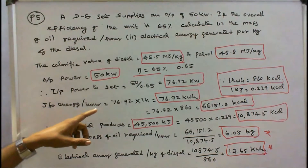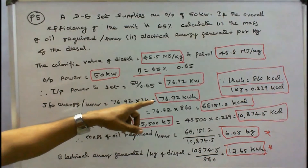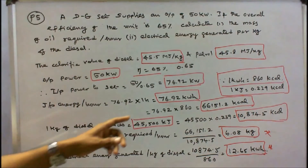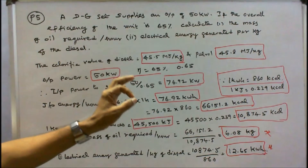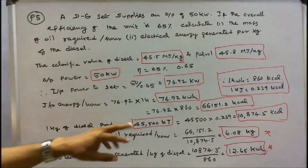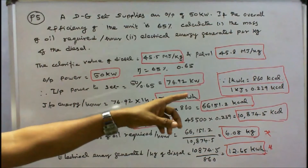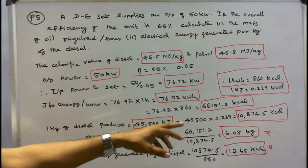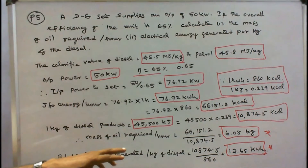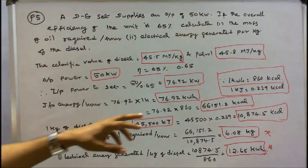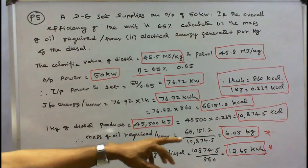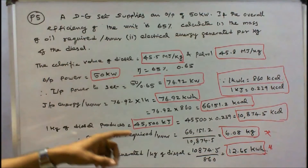Input energy per hour is 76.92 kWh. Converting to kilocalories using 1 kWh equals 860 kcal: 76.92 into 860 equals 66,151.2 kcal. One kg of diesel produces 45,500 kJ. Since 1 kJ equals 0.239 kcal, that is 45,500 into 0.239 equals 10,874.5 kcal per kg. Therefore mass of oil required per hour is 66,151.2 divided by 10,874.5, equal to 6.08 kg per hour.